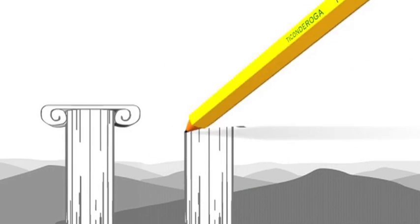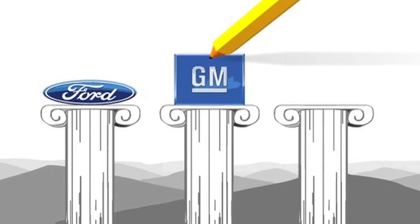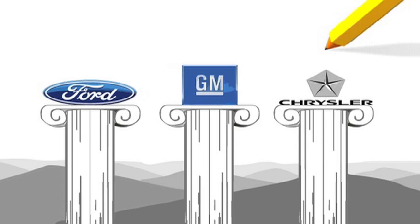All of these three developments culminated in forming what we now know as the Big Three. Ford, GM, and Chrysler became the three pillars of the American automotive industry and remain the three largest domestic manufacturers to this day.